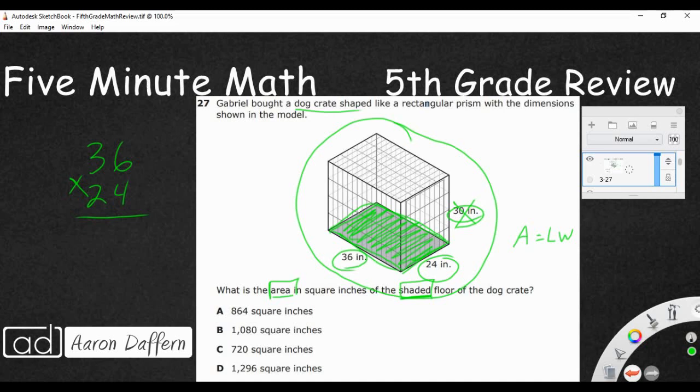So, now we have just a simple 2 by 2 multiplication. 6 times 4 is 24. Carry that 2. 4 times 3 is 12. Add the 2 back in. That's 14. Now, we're going to make a 0 for the second row. 2 times 6 is 12. And that's 2 times 3 is 6. Add that 1 is 7. So, we're going to add those two products together. And we are going to get 864. That's going to be inches squared or square inches. So, your answer is going to be A.